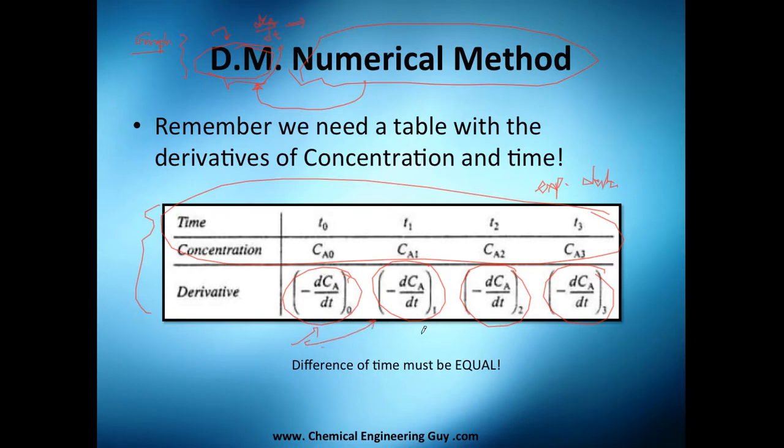One disadvantage is that the difference of these times must be equal. So if you have five seconds here and six seconds here, then ten seconds here and fifteen seconds here, this point will be lost - you won't be able to use it. Keep in mind when doing experimentation that it's very important to set the same length of time, so delta time must be constant.